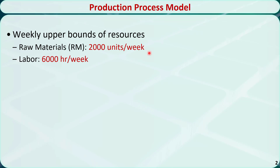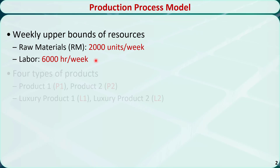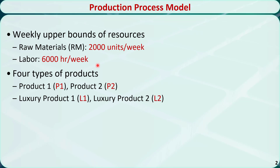The company can purchase at most 2,000 units of raw material per week. They have 6,000 labor hours available per week. The four types of products are product 1 (P1), product 2 (P2), luxury product 1 (L1), and luxury product 2 (L2).